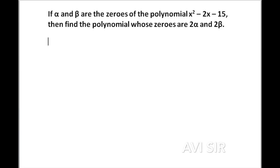Hi friends, welcome to our channel. Today's question is on polynomials, which is a very important question. If alpha and beta are the zeros of the polynomial x squared minus 2x minus 15, then find a polynomial whose zeros are two times alpha and two times beta. This is a quadratic polynomial, so we have two zeros.